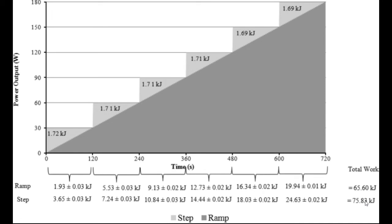This next graph outlines a graded step test. Along the bottom axis is time, the side axis is power output or resistance, and you have a linear increase in resistance over time. This is the standard VO2 max testing protocol — a linear increase in power output for a given amount of time.